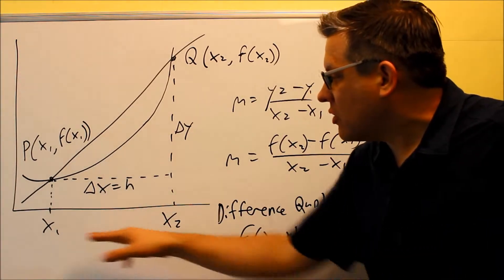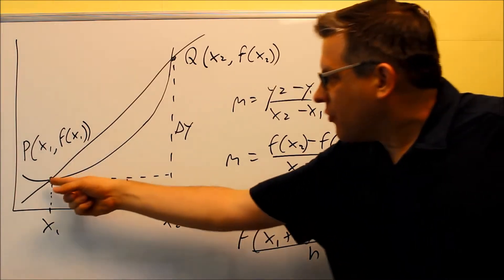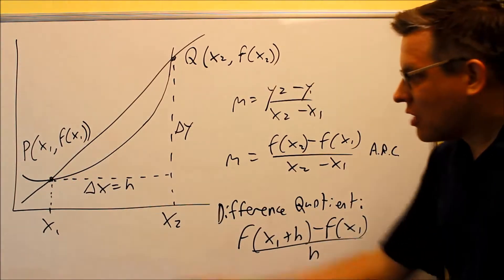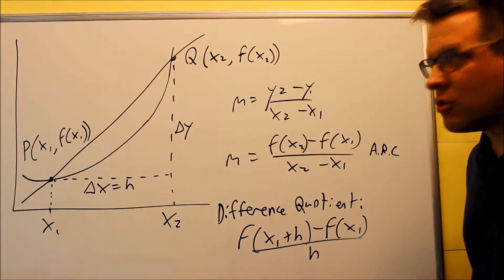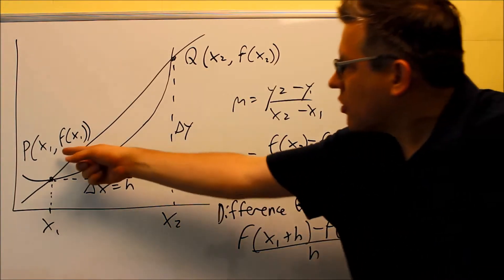x1, x2. The difference in the x values, we're going to call that h, that's your delta x. We also have a delta y, that's the difference in the y direction. And here's our two points that we have.